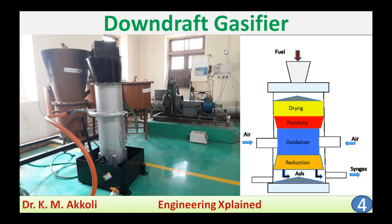In the downdraft gasifier, the biomass as well as the producer gas flows in the downward direction. Here you can see the photograph of the different types of downdraft gasifiers and the different zones of the downdraft gasifier.